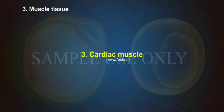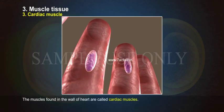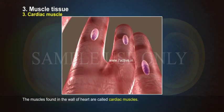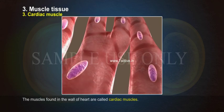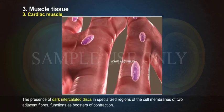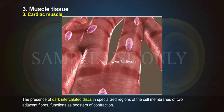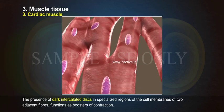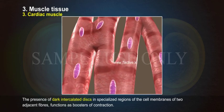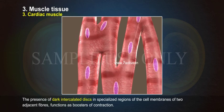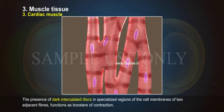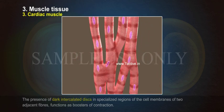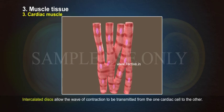Cardiac muscles: The muscles found in the wall of the heart are called cardiac muscles. The presence of dark intercalated discs in specialized regions of the cell membranes of two adjacent fibers functions as boosters of contraction. Intercalated discs allow the wave of contraction to be transmitted from one cardiac cell to the other.